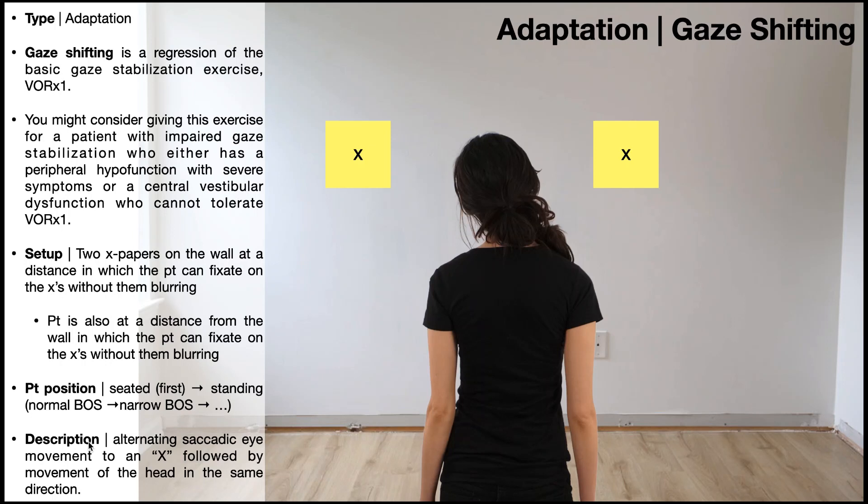To gaze shift, the patient's going to perform alternating saccadic eye movements to an X, followed by movement of the head in the same direction. The major difference between gaze shifting and VOR times one, other than the fact that there's two X papers here, is that in the VOR times one, the eye movement occurs simultaneously with the head movement. In gaze shifting, the eye movement occurs first, and then the head movement occurs afterwards.